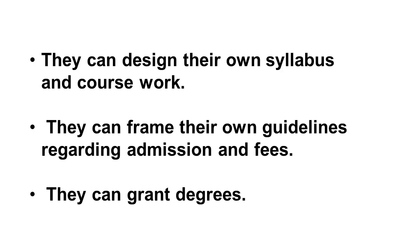Private or deemed universities can design their own syllabus and coursework, frame their own guidelines regarding admission and fees, and can also grant degrees. One important difference: in case of state universities, the governor of the state is the chancellor, and in case of central universities, the president is the chancellor. However, in the case of deemed universities, the governor is not the chancellor — they have their own appointed chancellor.